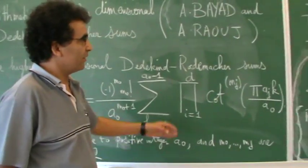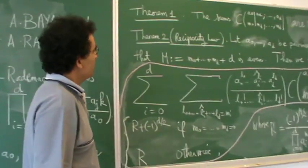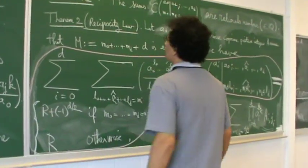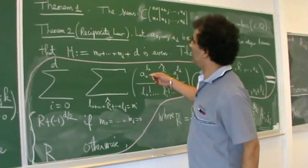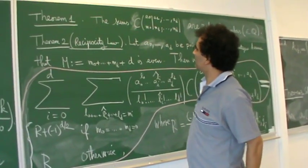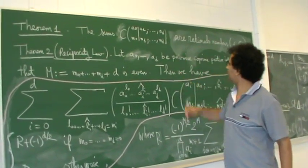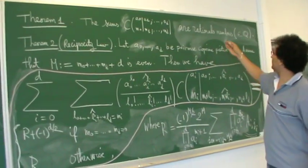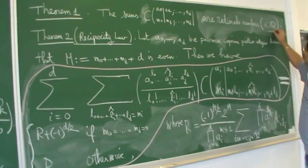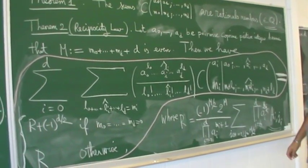For these sums, we have the following results. The first result: these sums are rational numbers, so they are in Q.